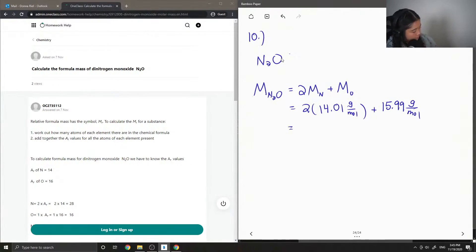Okay, so adding these values up, we end up getting 44.01 grams per mole. Okay, so let's see what the junior tutor said.